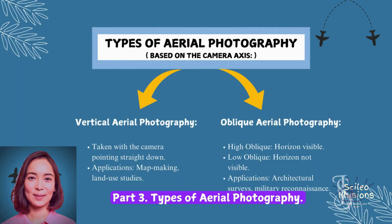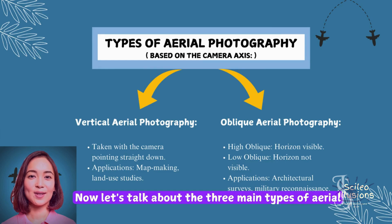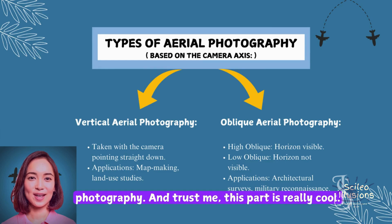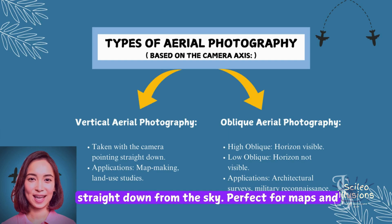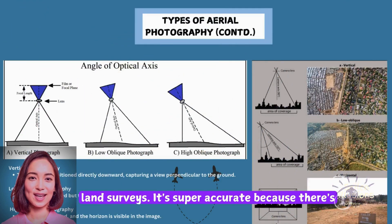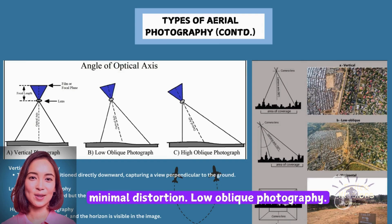Now let's talk about the three main types of aerial photography — and trust me, this part is really cool. Vertical photography: this is like looking straight down from the sky, perfect for maps and land surveys. It's super accurate because there's minimal distortion.